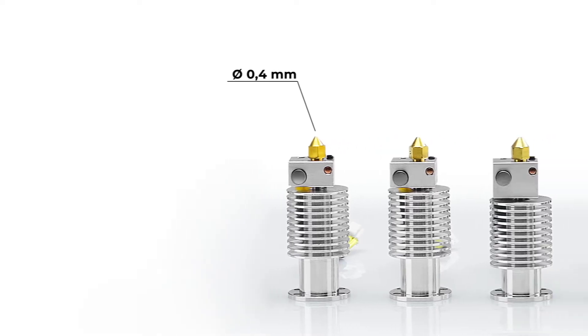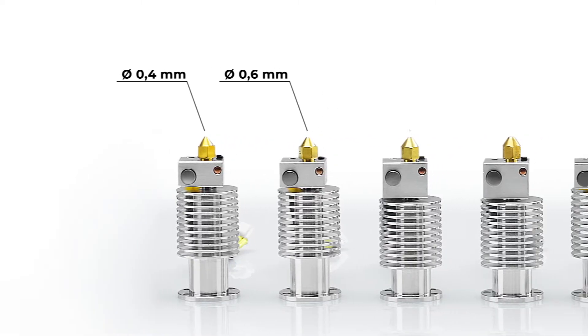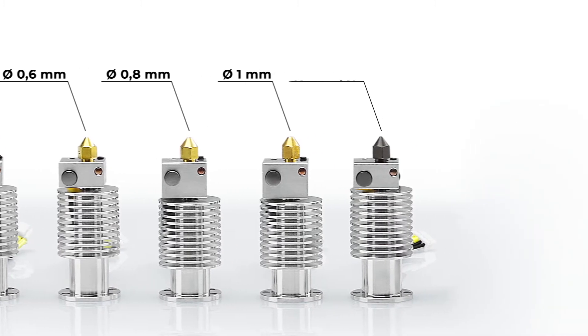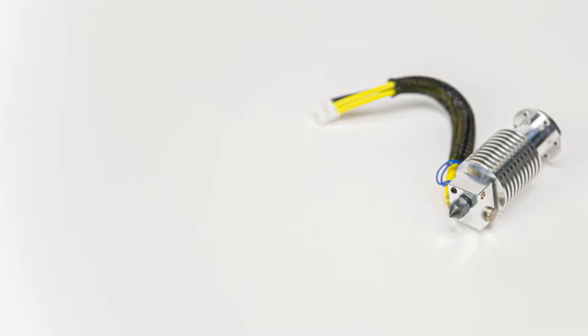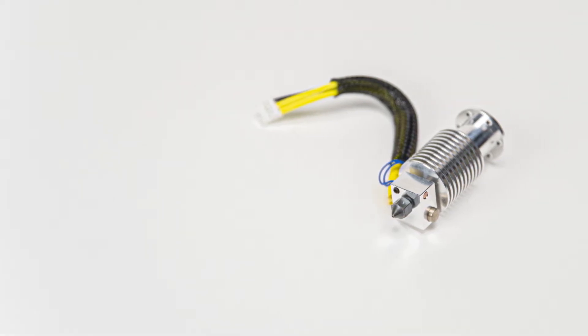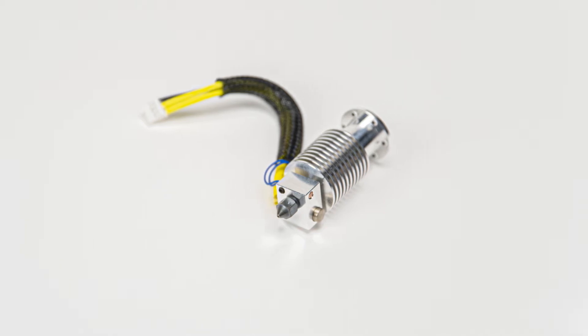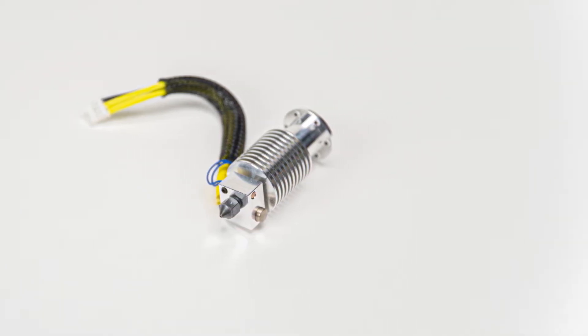At BCN3D, we have different hotends with different nozzle diameters. It is important to choose the appropriate hotend for each print or material. For example, we have one designed specifically for printing filament loaded with fibers, the Hotend X. If you are interested in printing these types of materials, you will find a link in the description with more information.